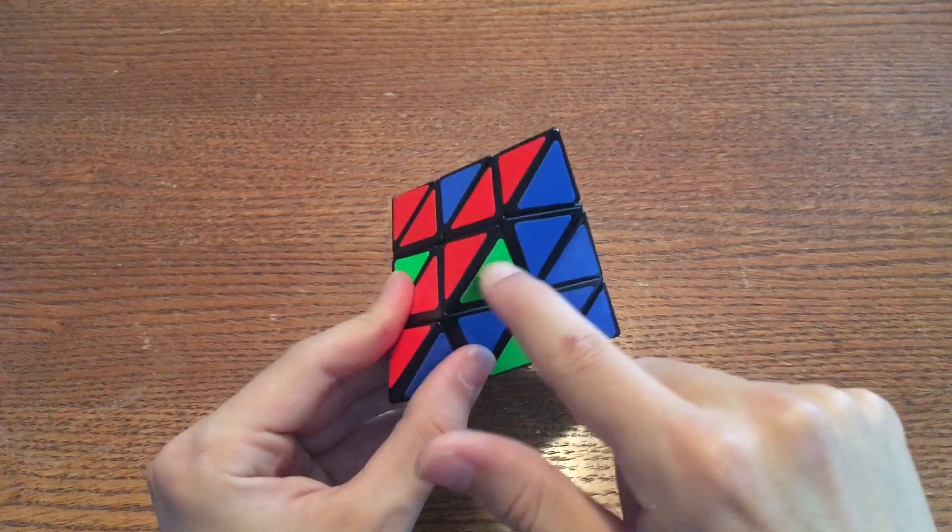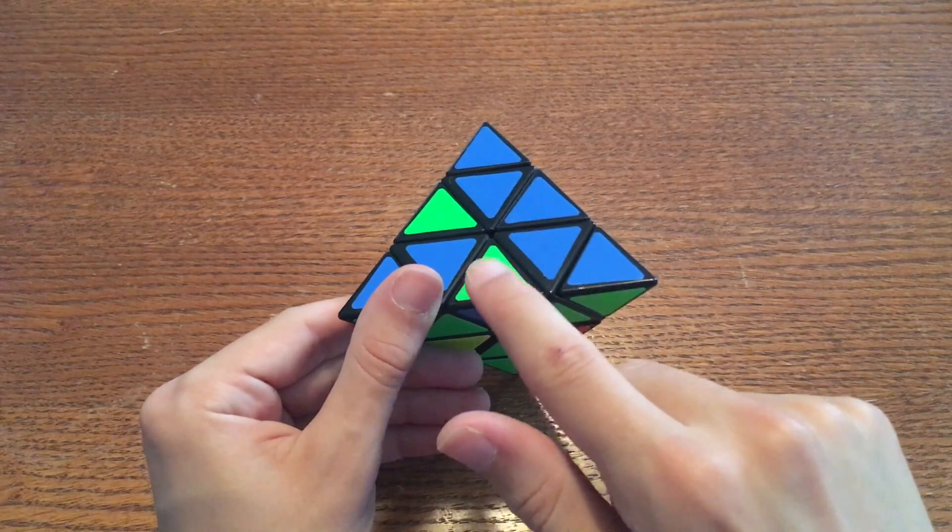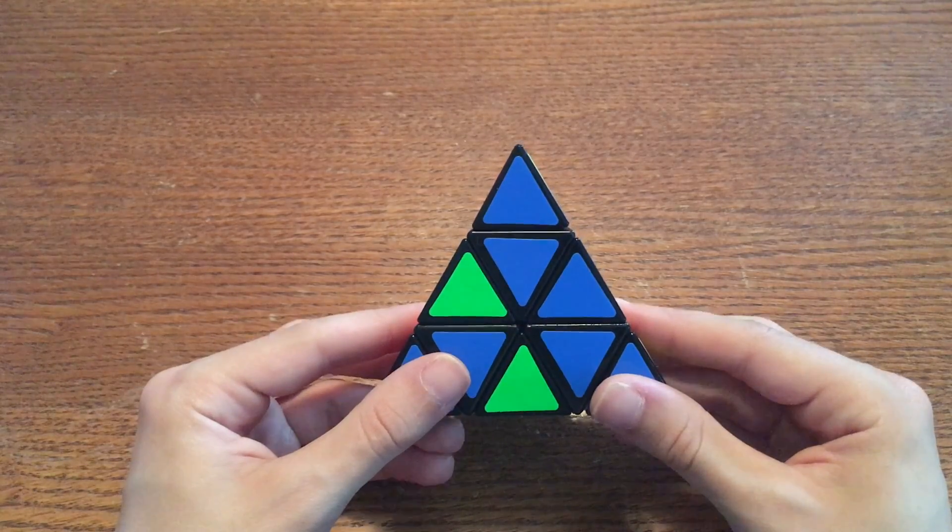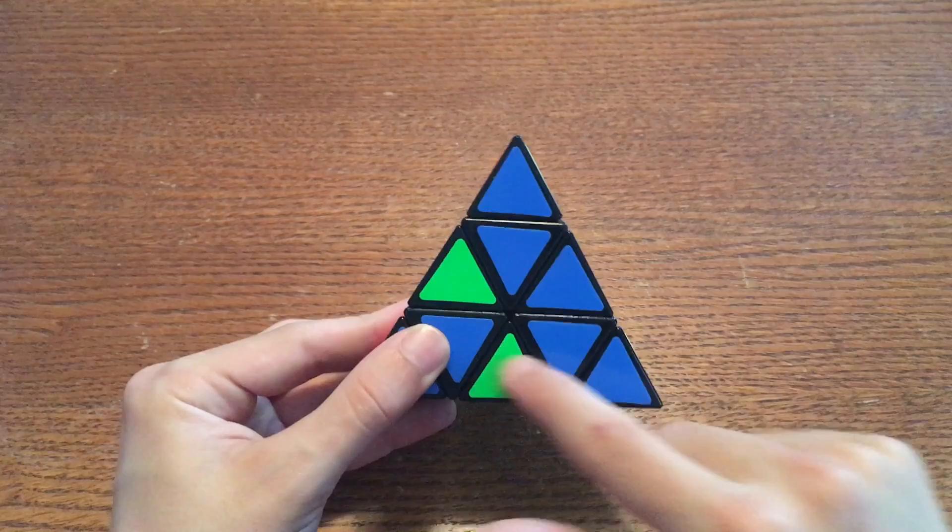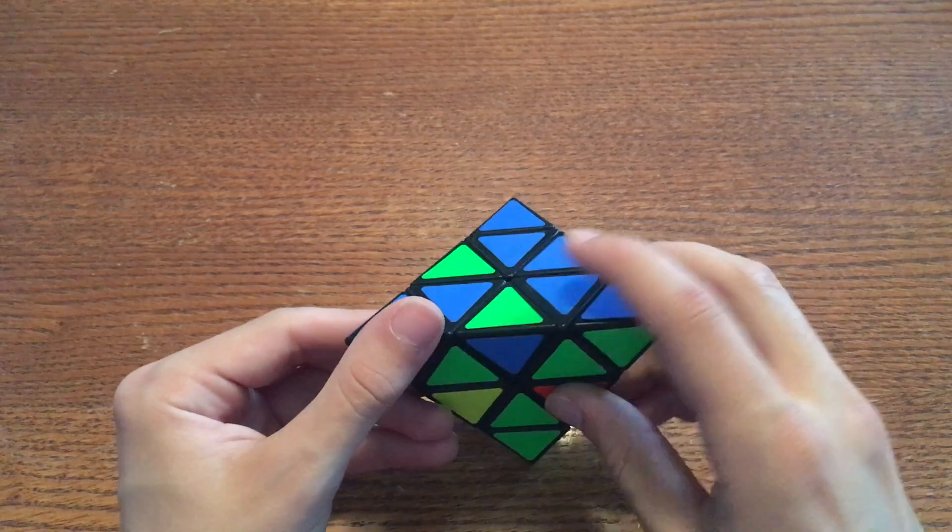For example, this edge here needs to go to the left, but this edge here is already in the correct place. So don't do the algorithm just yet. Instead, turn the bottom layer until the edge that is here on the bottom is not in the correct spot.